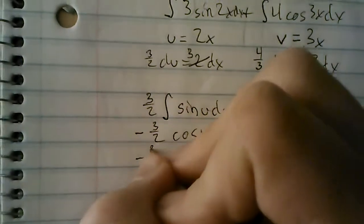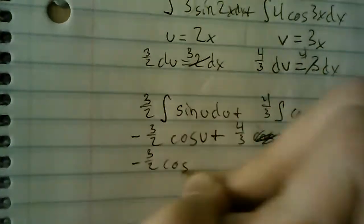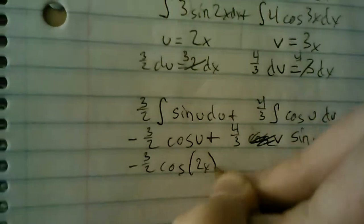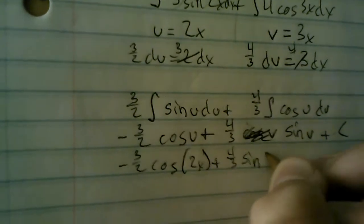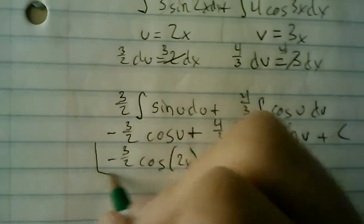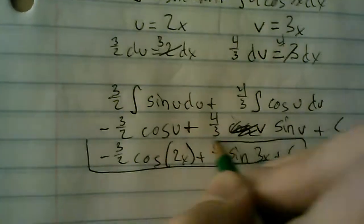So, now we plug it back in. We get negative three halves cosine of 2x plus four thirds sine of 3x plus c. And that is the integral.